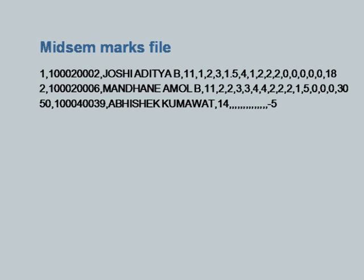Here is a sample mid-sem file. It is not a spreadsheet file. Every modern spreadsheet permits you to export the data in a variety of formats. One of the commonly used formats is known as comma separated value format or CSV format. When I export the data in CSV format, I will get a text file which will look something like this - a whole lot of things separated by commas.